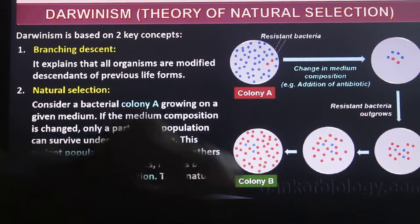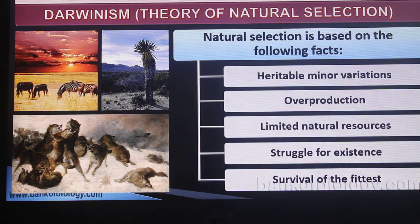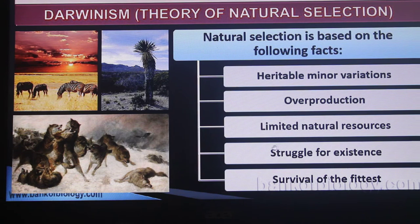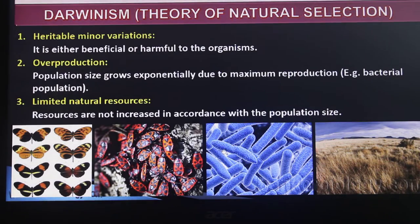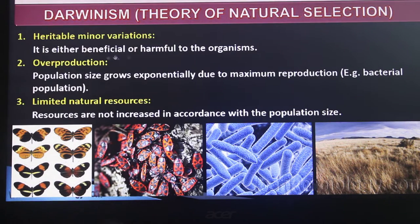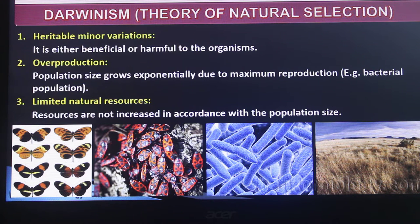Darwin's natural selection is based upon the following facts: variable minor variations — these can be either beneficial or harmful to the organism. Variations are favorable or unfavorable, and that is a very important point.